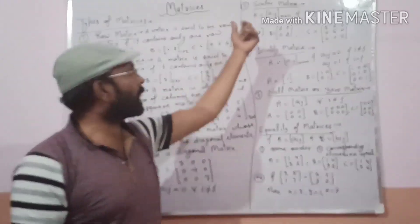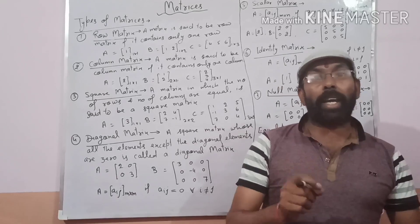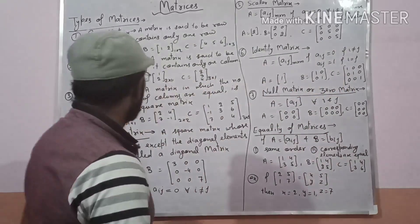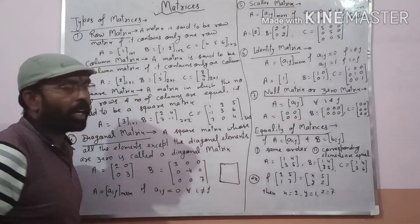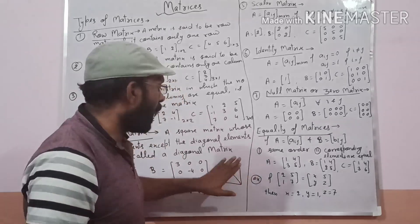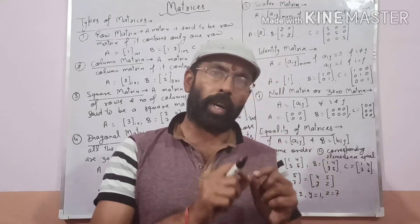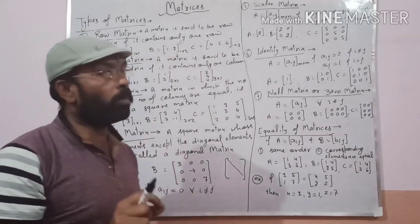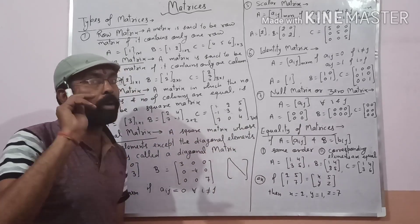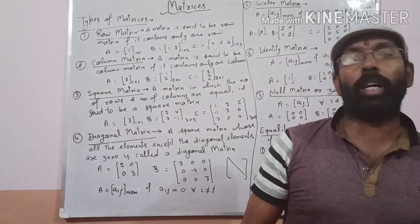Next topics are diagonal matrix, scalar matrix, and identity matrix — these are interconnected. A matrix is called a diagonal matrix if all the elements other than the diagonal elements are zero. The diagonal in a matrix runs from the first element to the last element, and the matrix must be a square matrix. So a square matrix whose all elements except the diagonal elements are zero is called a diagonal matrix.